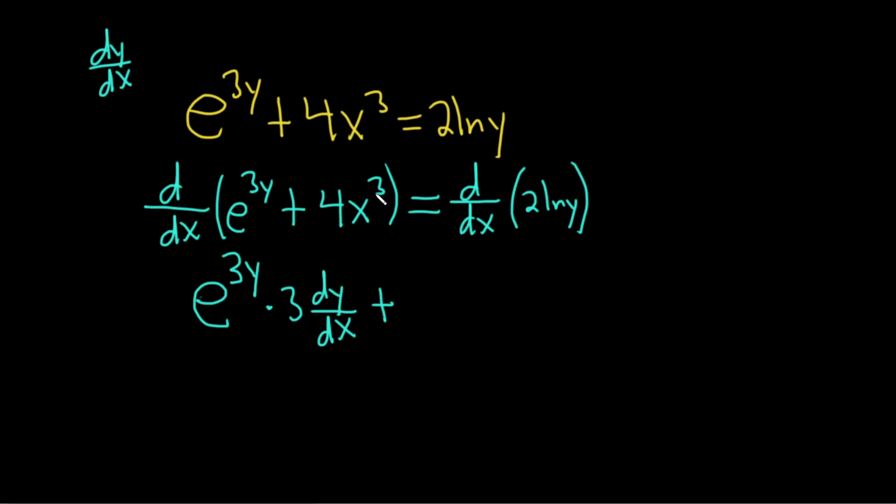Plus, here we can use the power rule, so we'll bring down the 3. 3 times 4 is 12, then subtract 1 from the 3, that gives us 2. And that's equal to the derivative of the natural log of y, which is 1 over y. We get 2 times 1 over y times the derivative of the inside function. In this case, the inside function is y, so its derivative is dy/dx.